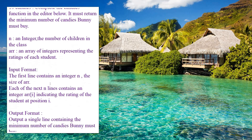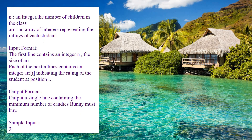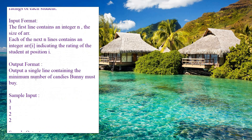The parameter n is an integer representing the number of children in the class. The array arr represents the ratings of each student. In the input format, the first line contains integer n representing the size of the array, and the next n lines each contain an integer arr[i] indicating the rating of the student at position i. The output format requires displaying a single line containing the minimum number of candies Bunny must buy.